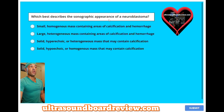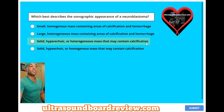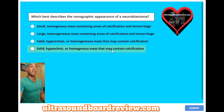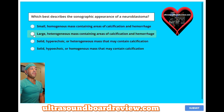Which best describes the sonographic appearance of a neuroblastoma? A, small homogeneous mass containing areas of calcification and hemorrhage. B, large heterogeneous mass containing areas of calcification and hemorrhage. C, solid hyperechoic or heterogeneous mass that may contain calcification. Or D, solid hypoechoic or homogeneous mass that may contain calcification. The answer is B, large heterogeneous mass containing areas of calcification and hemorrhage.